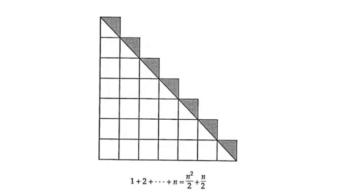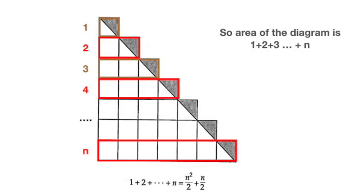If we assume that each square has an area of 1 and sum up the area of the diagram along each of the rows, then we get 1 plus 2 plus 3 up until plus n.